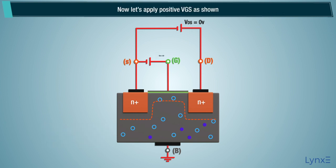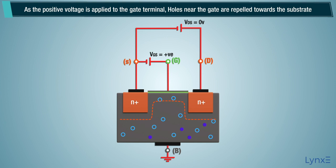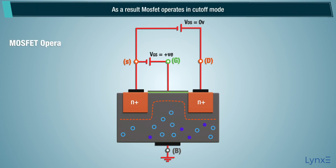Now let's apply positive VGS as shown. As the positive voltage is applied to the gate terminal, holes near the gate are repelled towards the substrate. As a result, MOSFET operates in cut-off mode.